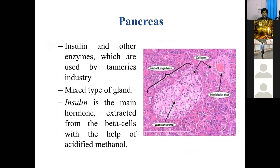The pancreas is a mixed type of gland with roles in glycolysis and digestive balance. In the microstructure of the pancreas, the islets of Langerhans are an endocrine portion having two types of cells: alpha cells and beta cells. Alpha cells secrete glucagon and beta cells secrete insulin. These two hormones — insulin and glucagon — are obtained from the islets of Langerhans.